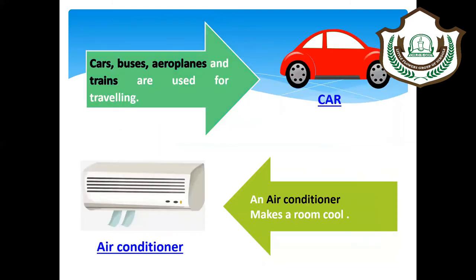Cars, buses, airplanes, and trains are used for traveling — these machines are used for traveling. Next is the air conditioner. An air conditioner makes a room cool.